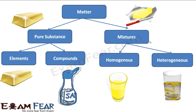Let's see the classification of mixture. Pure substances are classified into elements and compounds. Mixture is classified into homogeneous mixture and heterogeneous mixture. What is homogeneous? What is heterogeneous?